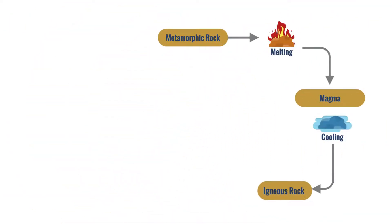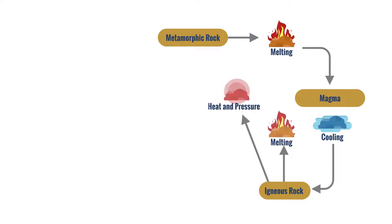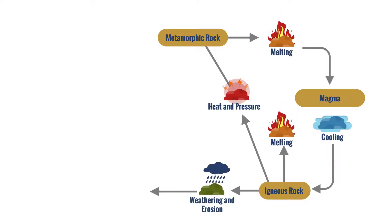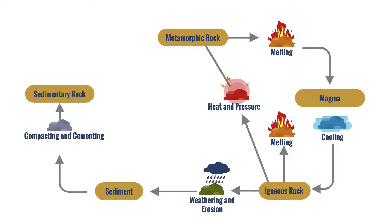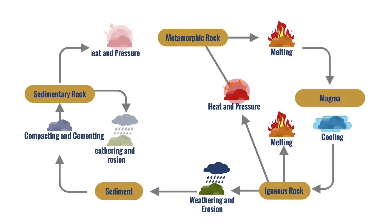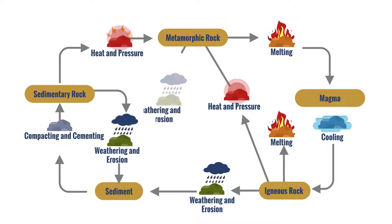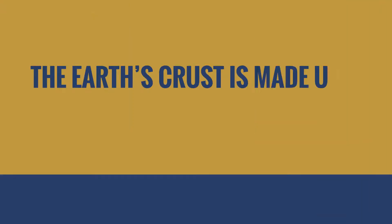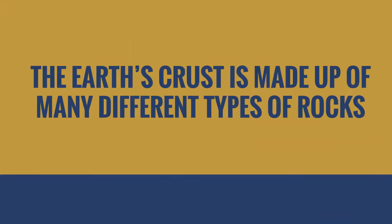Tectonic activity combined with weathering and erosional processes result in the constant recycling of rocks. The Earth's crust is made up of many different types of rocks.